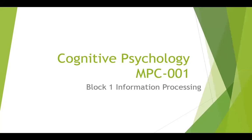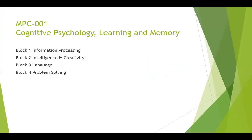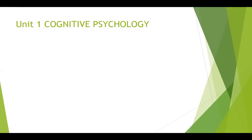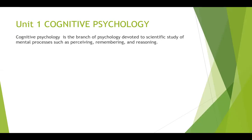Cognitive psychology, MPC one, block one: information processing in cognitive psychology. In learning and memory, we have four blocks: information processing, intelligence and creativity, language, and problem solving. In block one, we have unit one: cognitive psychology introduction; unit two: information processing in learning and memory; unit three: neuropsychological basis of learning and memory; and unit four: models of information processing.